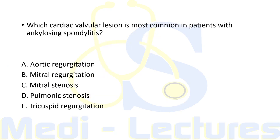The next question: which cardiac valvular lesion is most common in patients with AS? As discussed, aortic insufficiency can develop, so the most common valvular lesion is aortic regurgitation.